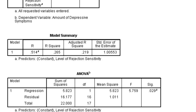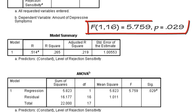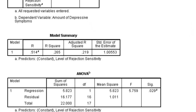We would report the model's significance as F(1, 16) — our degrees of freedom — equals 5.759, our F value, p equals .029, which is our significance value.